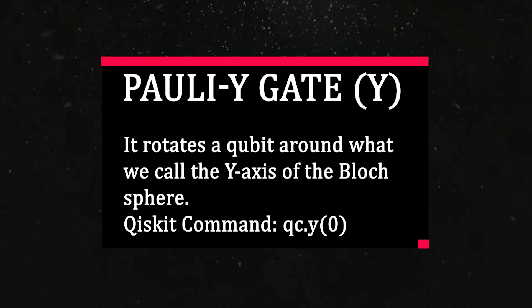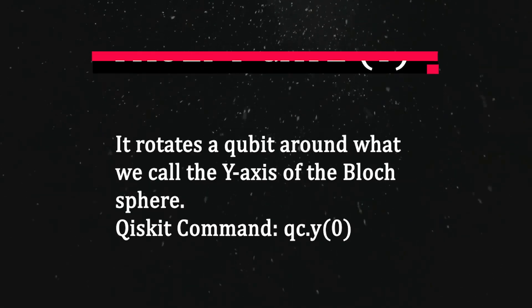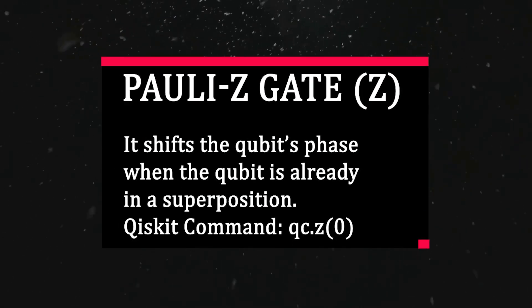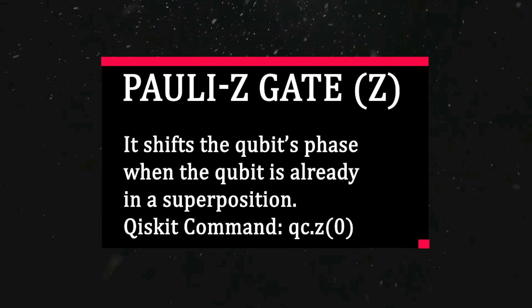Number four: Pauli Z gate, called the Z gate. It shifts the qubit's phase when the qubit is already in a superposition. Essentially it changes the relative sign of the qubit's possible outcomes without directly swapping them.